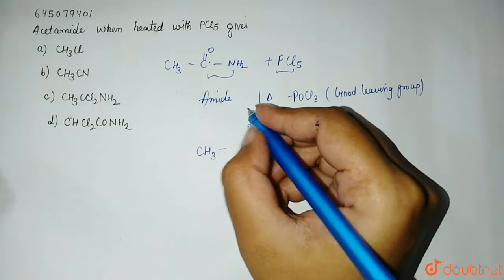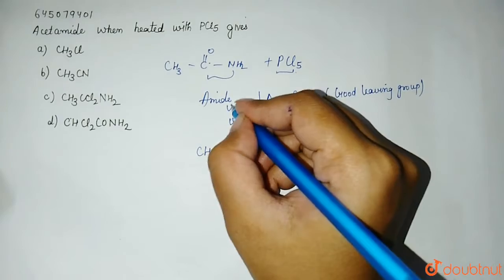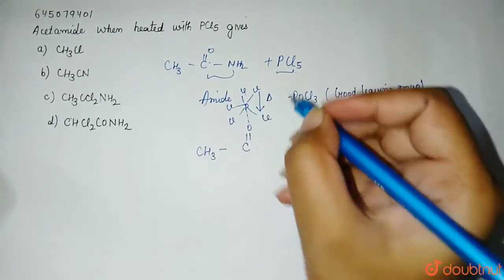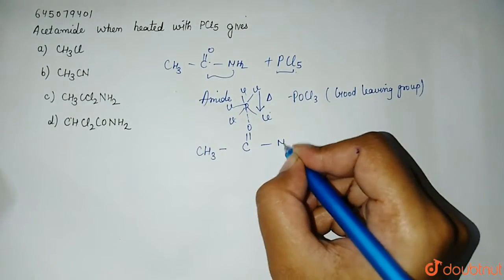it will abstract the oxygen from your amide and from here, like this, this is your phosphorus, chlorine and here, we are having 1, 2, 3, 4, 5. This is 5-chlorine which is present and here, we are having NH2.